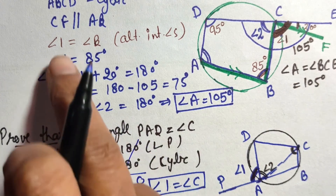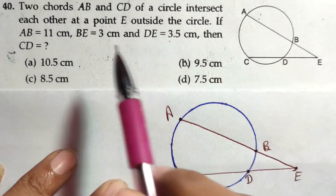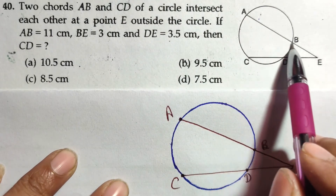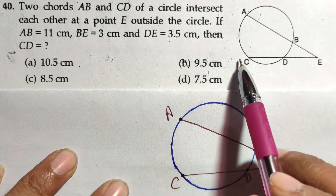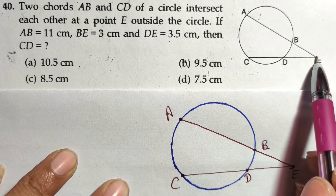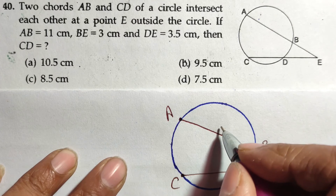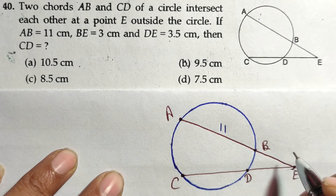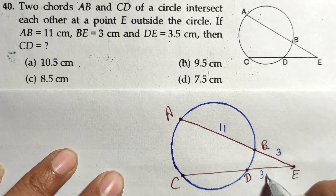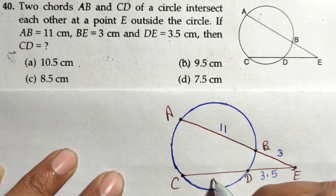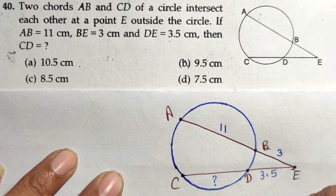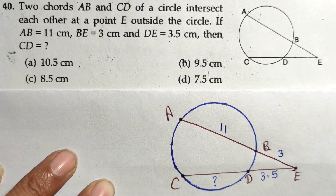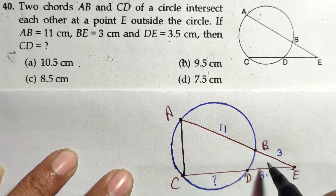You can use that property directly in such questions. Now let's look at question 40. AB and CD are two chords of a circle and they intersect at point E when produced. The given line segments are: AB equals 11, BE equals 3, and DE equals 3.5. We have to calculate CD.